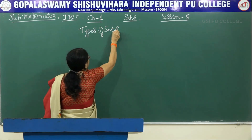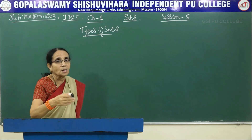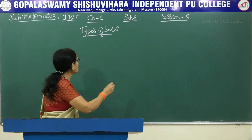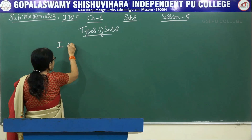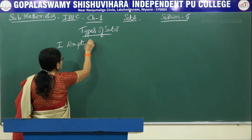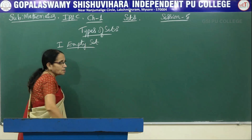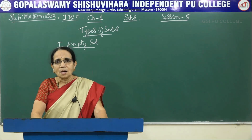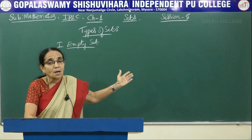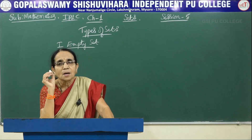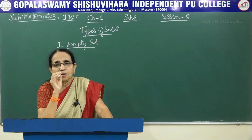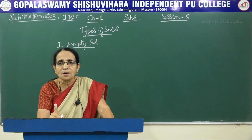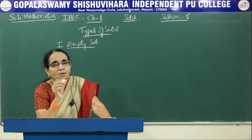Types of sets. Now, the first one is known as an empty set. The word empty itself tells that there is nothing in the set — it gives us the clear definition itself. A set containing no element: if a set does not contain any element, then it is called an empty set, or we call it a null set, or it is also known as a void set.